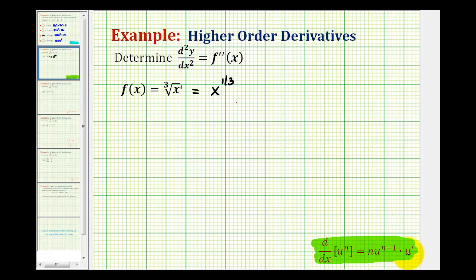For example, looking at this function, if we did want to apply the chain rule letting u equal the inner function, we would have u equal to x and therefore u prime would be equal to one. This tells us that we do not have to apply the chain rule and we can use just the basic power rule.